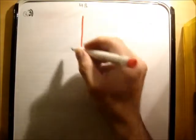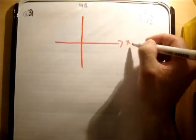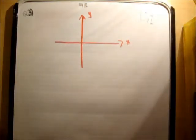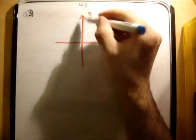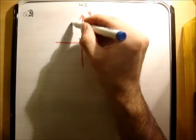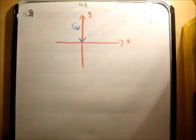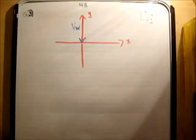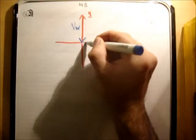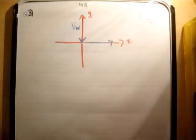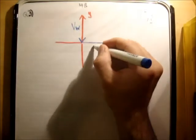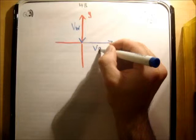So just to sketch the motion here, we'll draw our x-axis and draw our y-axis. The wind is blowing from north to south, so it's in this direction here. That's VW. And we know the plane is actually moving due east, like so. Alright, that is the velocity of the plane. Like so.